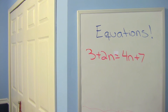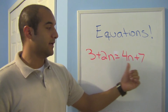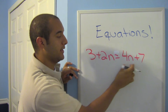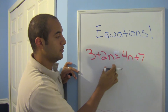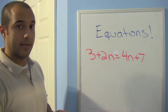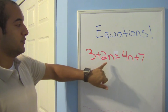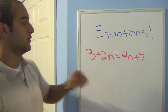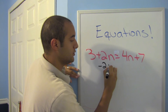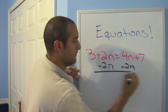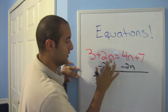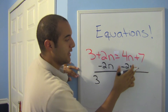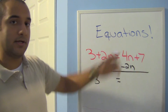Here's a challenge question — see if you can do it before I do. Notice that I have variables on both the left and the right side. I'm going to choose to move the 2n to the right side so I can keep my variable positive, so minus 2n on both sides. Anything I didn't touch I bring down — so I have 3 on the left, and on the right I have 4n minus 2n.